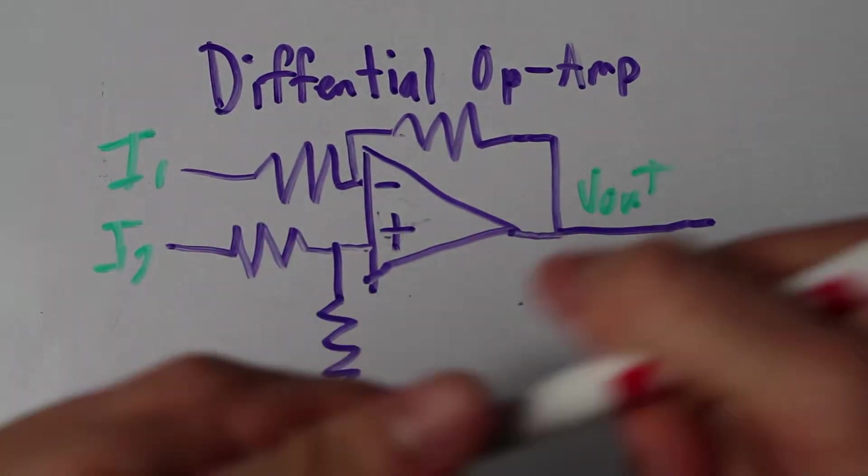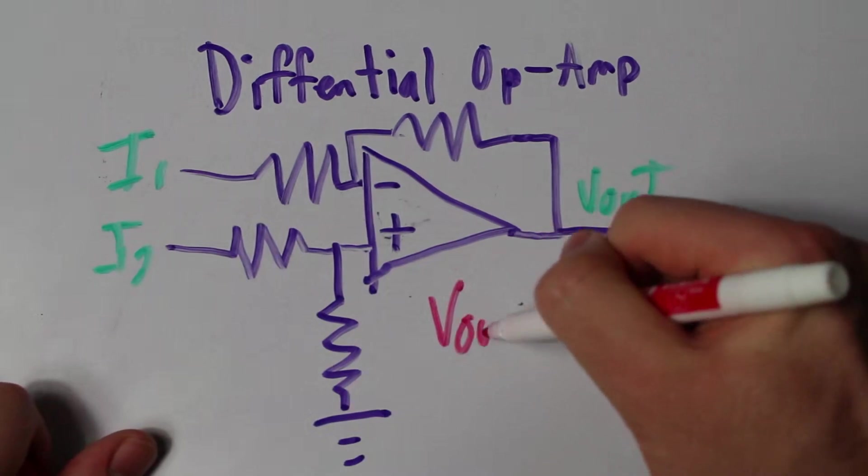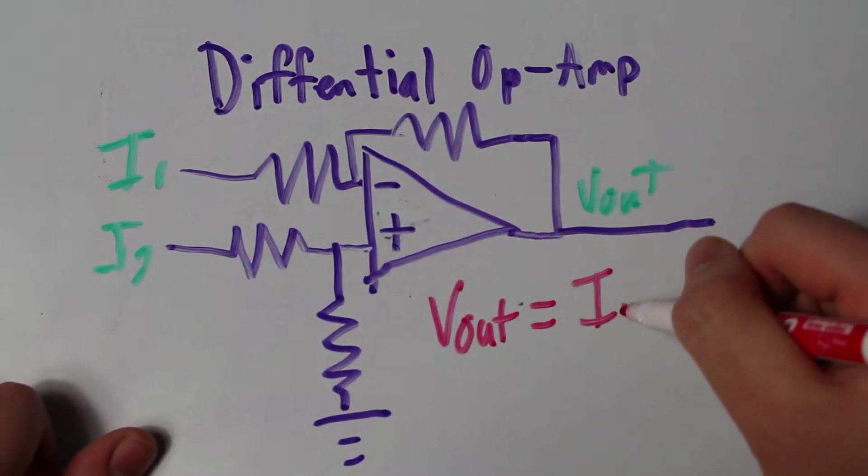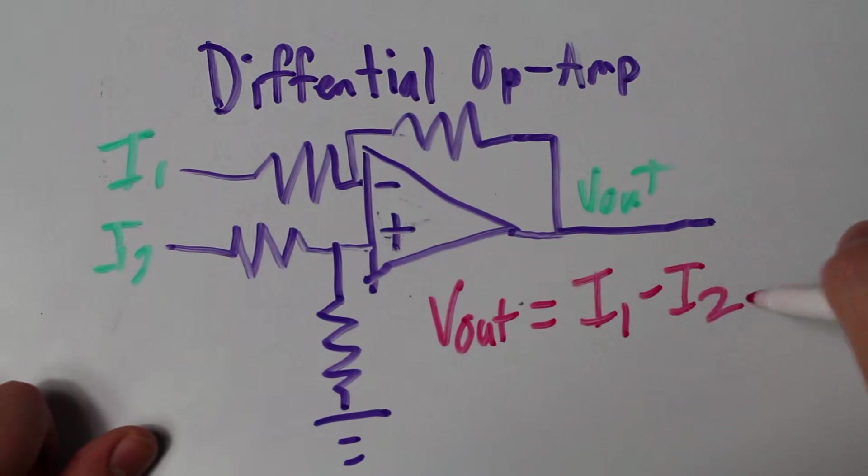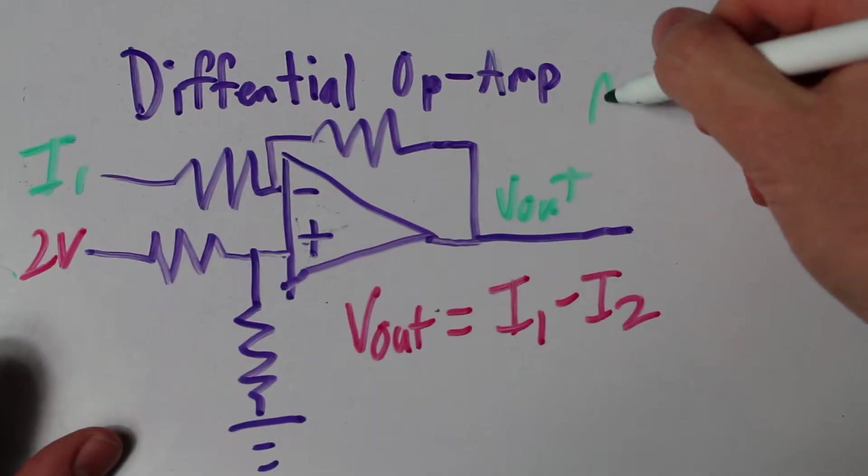That means that if the inverting input is set to 4 volts, then the difference is 2 volts, which makes our peak. When the input is 0 volts, the difference is negative 2 volts, which is now our negative peak.